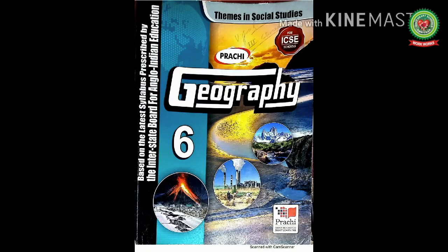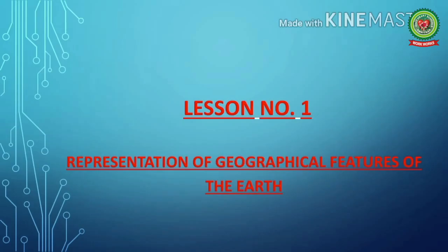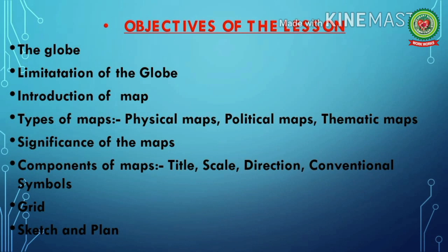Hello students, take out your geography book of class 6th. Today we will start the first chapter of geography: Representation of Geographical Features of the Earth. In this chapter we will discuss the globe, limitation of the globe, introduction of map, types of maps — physical maps, political maps and thematic maps — then significance of maps, components of maps including title, scale, direction and conventional symbols, then grid, sketch and plan.